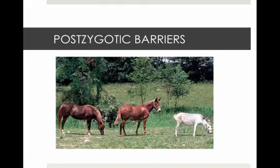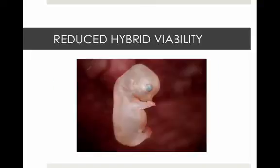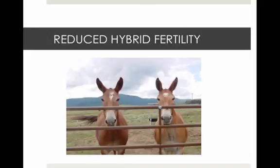There are also postzygotic barriers. If fertilization does occur, a viable fertile offspring doesn't develop. One type is reduced hybrid viability, where genetic incompatibility causes an abortion. Another type is reduced hybrid fertility, where an offspring is born but it's sterile and cannot produce its own offspring. An example is a mule.